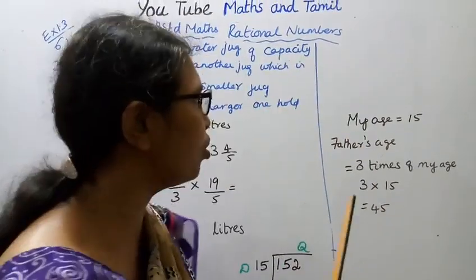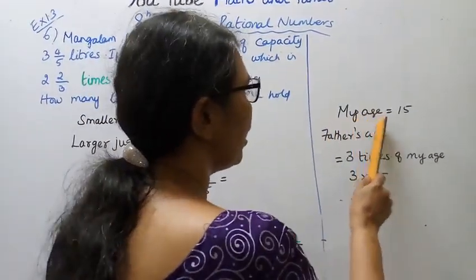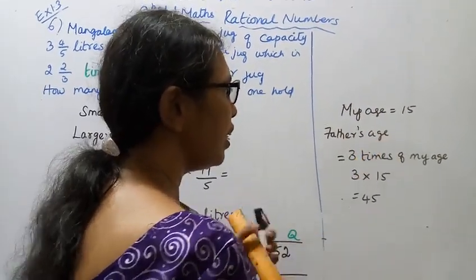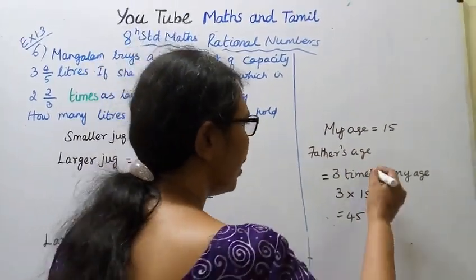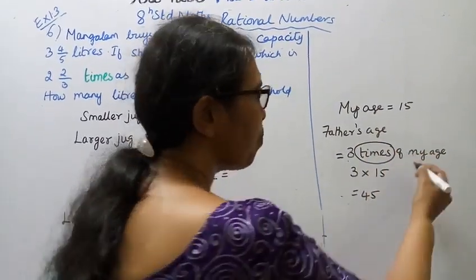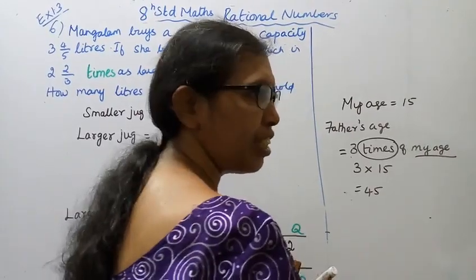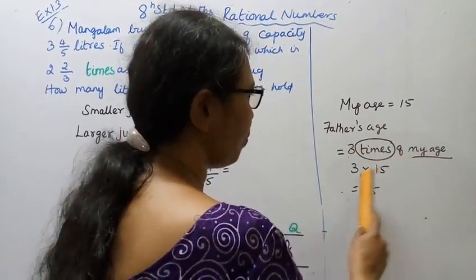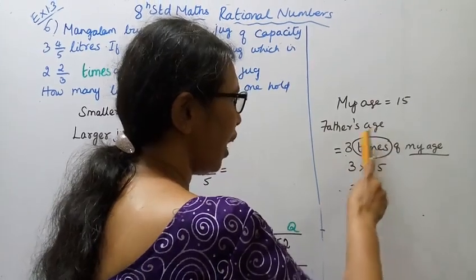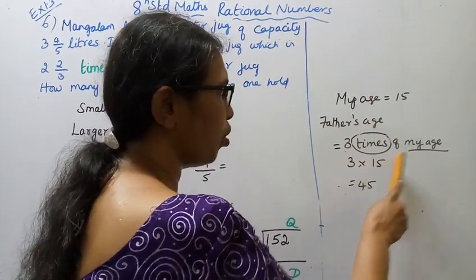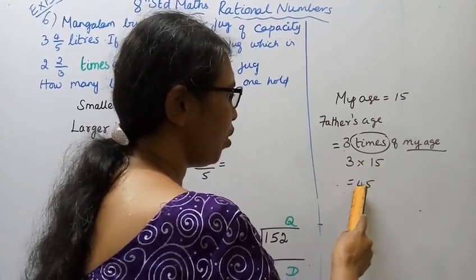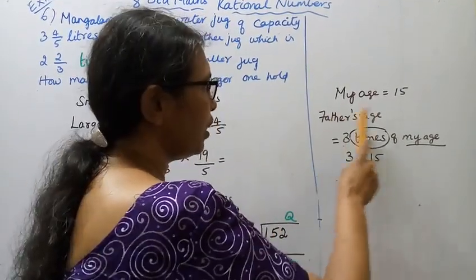Let me give you a small example to make this easy. My age is 15. Father's age is 3 times of my age. So father's age equals 3 times my age, which is 3 times 15 equals 45. Father's age is 45.